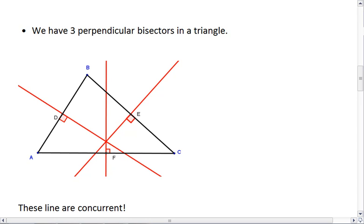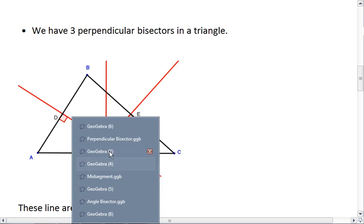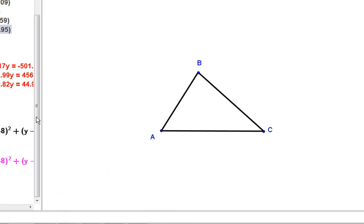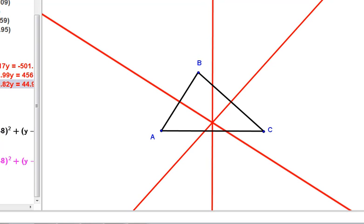What we should notice is that when we have our three perpendicular bisectors, so one, two, and three, we can confirm they're right angles.